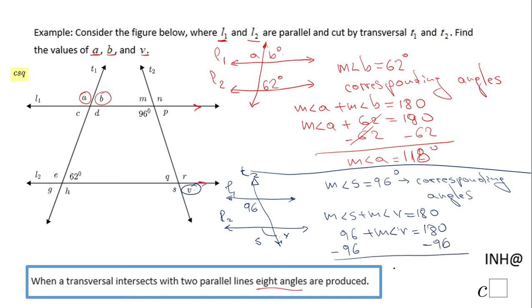We end up with the measure of angle V being 84 degrees. And that's it — so we have A = 118°, B = 62°, and V = 84°. If you enjoyed this video, don't forget to click the like button and come back to C Squared for more help. Thank you!